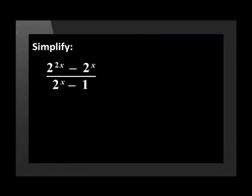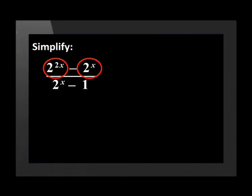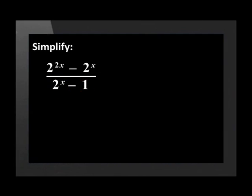Simplify: 2 to the power of 2x minus 2 to the power of x, divided by 2 to the power of x minus 1. Because this is a fraction the whole thing can be one term; however, there are two terms in the numerator and two in the denominator. We cannot do cancelling unless there is one term on top and one on the bottom.